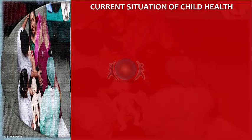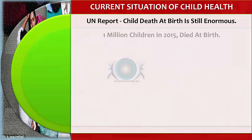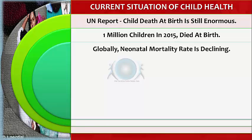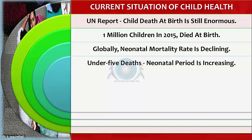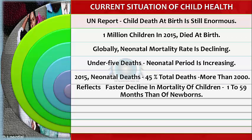According to the United Nations report, child death at birth is still enormous — approximately 1 million children died at birth in 2015 globally. The neonatal mortality rate, that is the probability of dying during the first 28 days of life, is declining, but less rapidly than the mortality rate for children between one month and five years of age. In 2015, neonatal deaths accounted for 45% of total under-five deaths — 5% more than in 2000.